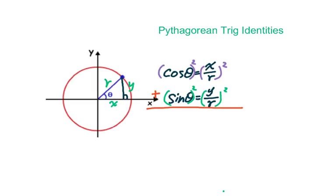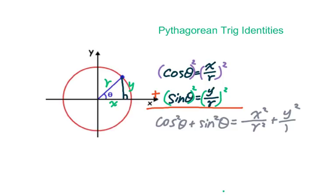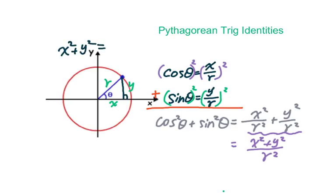When we square both sides and add them together, we get cosine squared θ plus sine squared θ equals x squared over r squared plus y squared over r squared. Working on the right side, we get r squared on the bottom. On top we have x squared plus y squared, which equals r squared, since for this right triangle we have x squared plus y squared equals r squared. Therefore we get r squared over r squared, which equals 1.